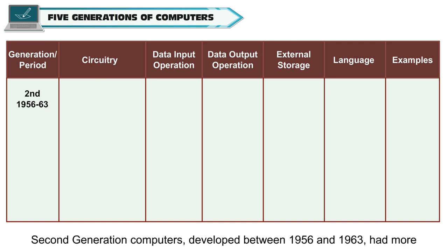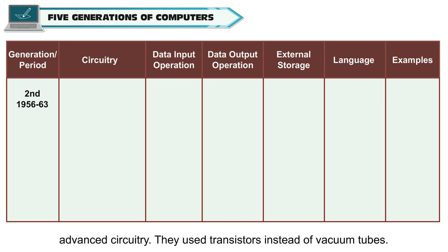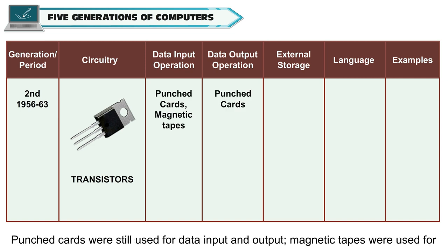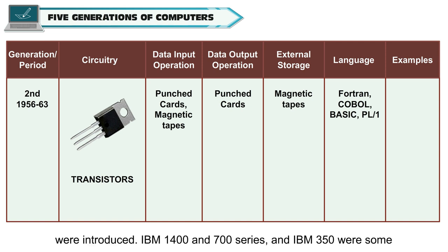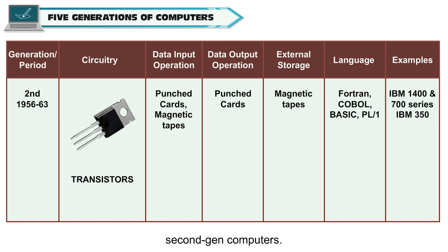Second generation computers, developed between 1956 and 1963, had more advanced circuitry. They used transistors instead of vacuum tubes. Punched cards were still used for data input and output, while magnetic tapes were used for input and storage. Computer languages like COBOL, FORTRAN, BASIC and PL/1 were introduced. IBM 1400 and 700 series and IBM 350 were some second-generation computers.